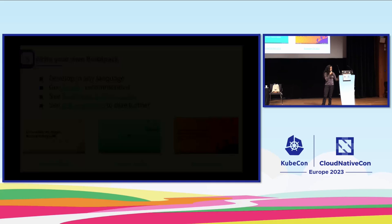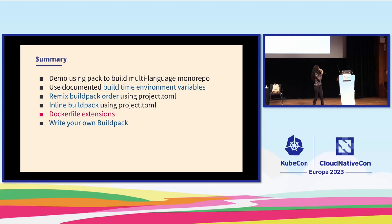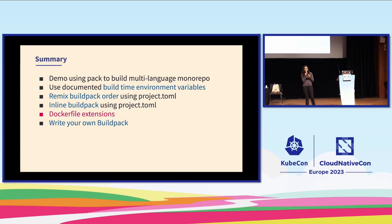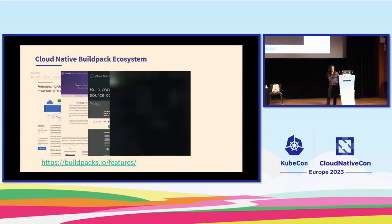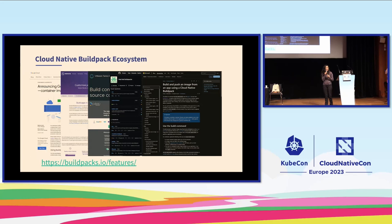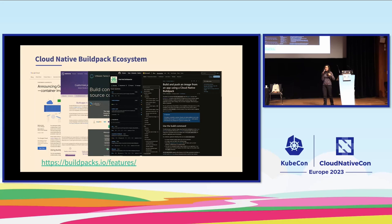To summarize: Aiden gave a demo of pack build on a multi-language mono repo, showing how powerful buildpacks are. To customise your build, you can go from something as simple as providing an environment variable or remixing the build order, to writing an inline buildpack, to Dockerfile extensions, to writing your own buildpack. There are a number of companies and organizations providing platforms, buildpacks, or both — we are an open source CNCF project and love to talk to contributors and hear from users. Please come by our booth in the project pavilion.